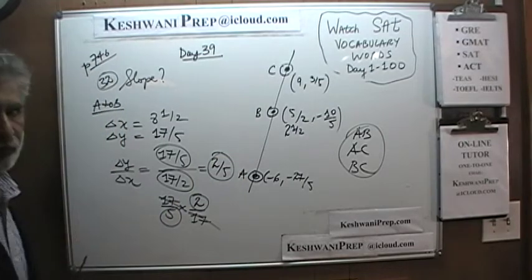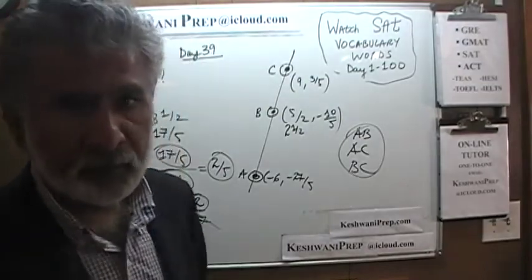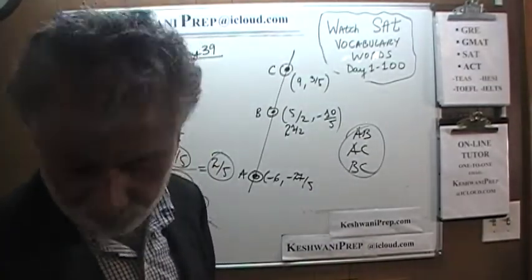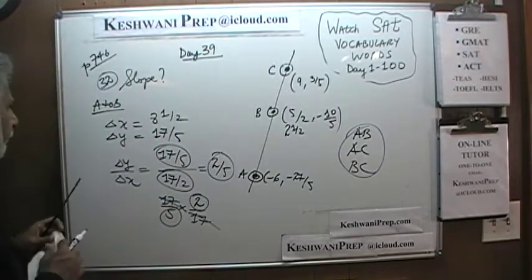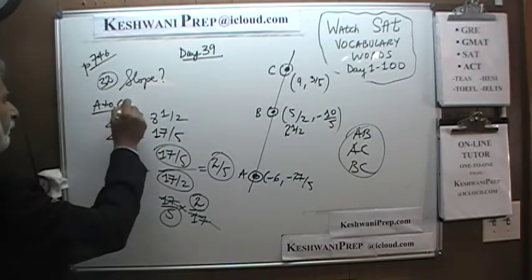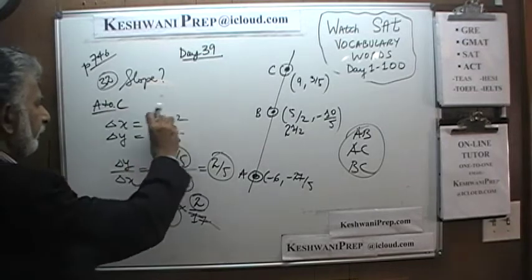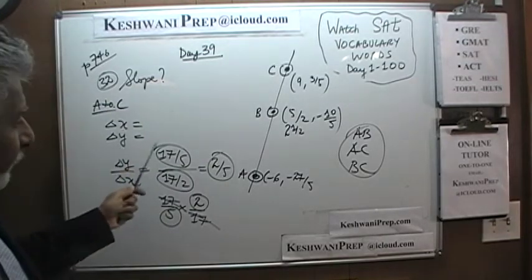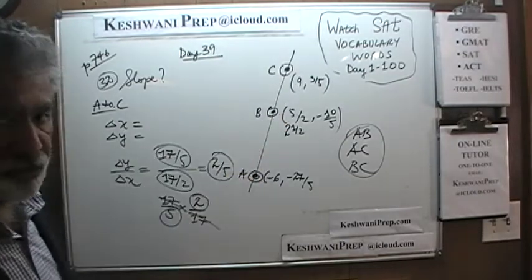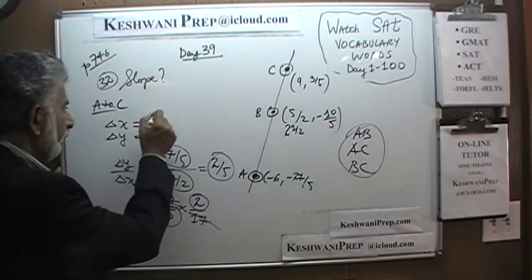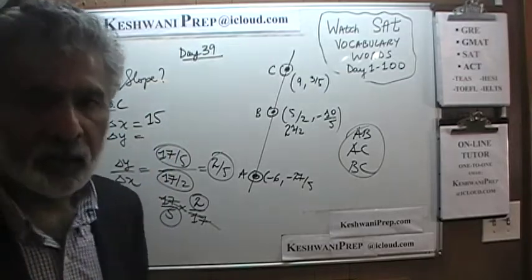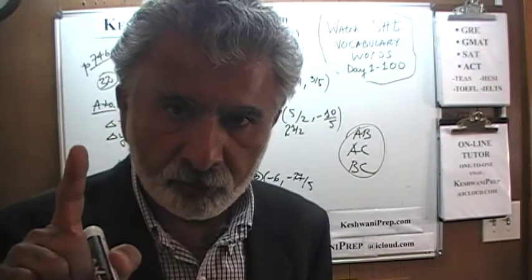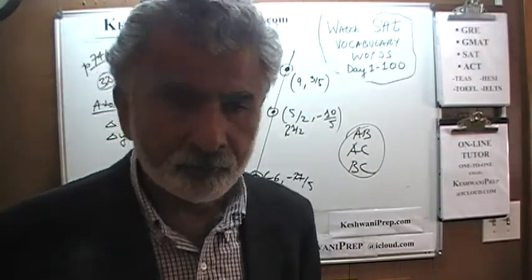Slope is simply 2 fifths. I wonder what slope is going to turn out to be had we made our journey from A to C — should we find out? Let's find out. Going from A to C, let's see how far we have to travel. Change in X: all the way from negative 6 to 9, that's a journey of 15 units. Imagine in your mind a number line: from negative 6 to 0 is 6 units, and then 0 to 9 is another 9 units — 15 units.